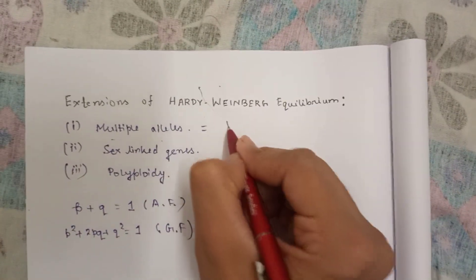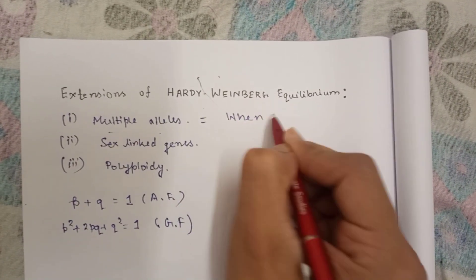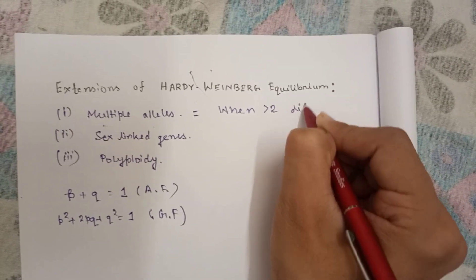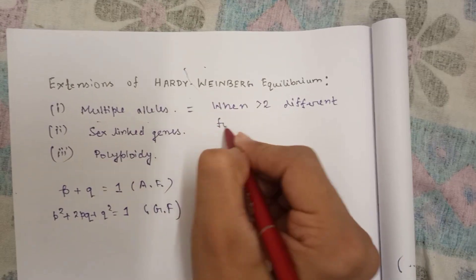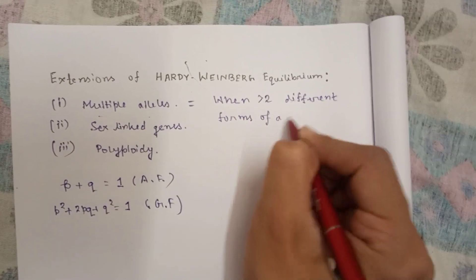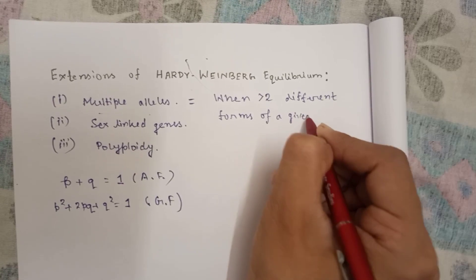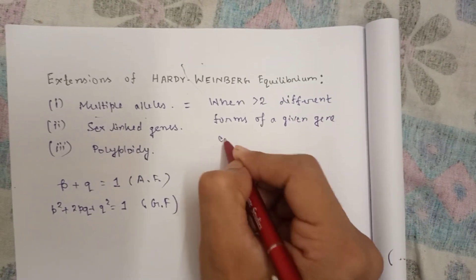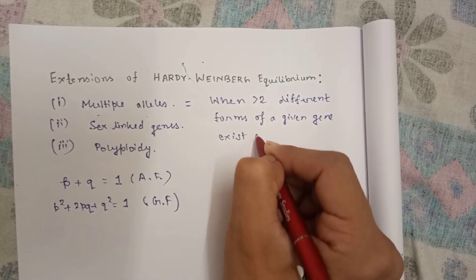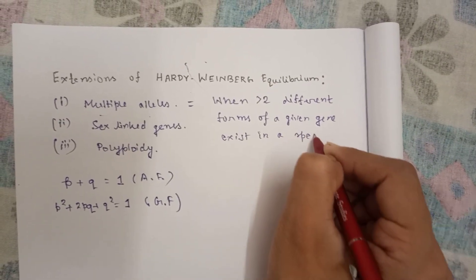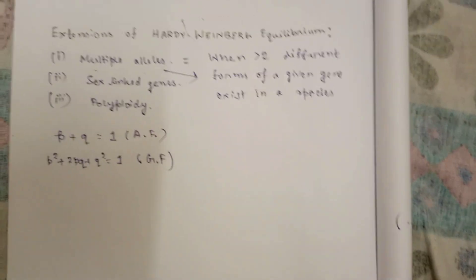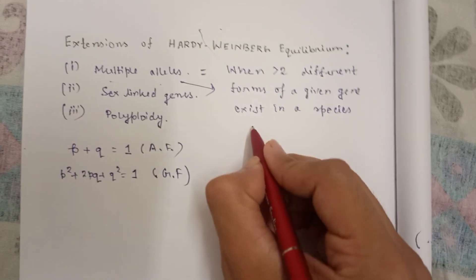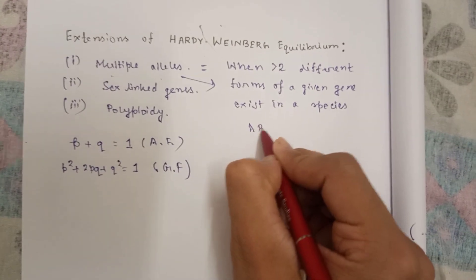Multiple alleles means when more than two different forms of a gene of a given gene exist in a species. The big example of multiple alleles is our ABO blood group.